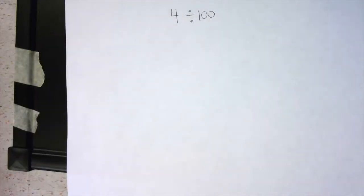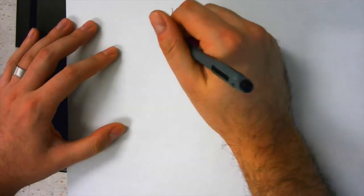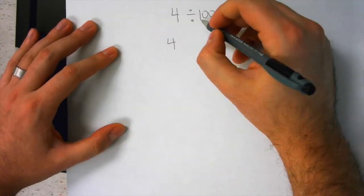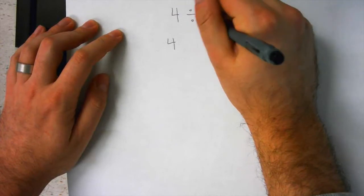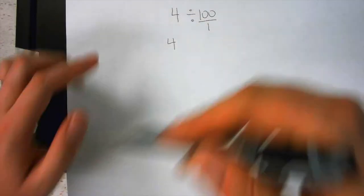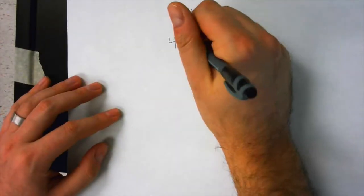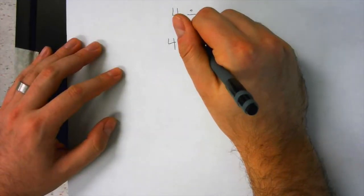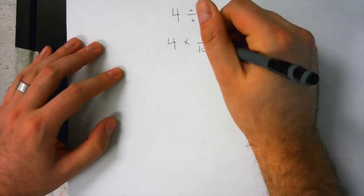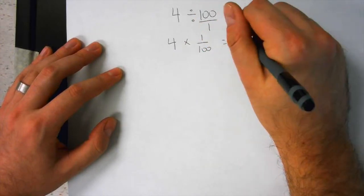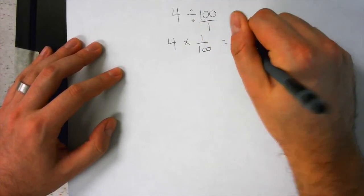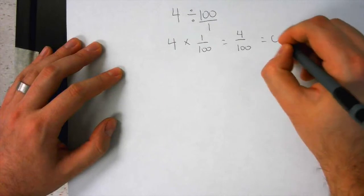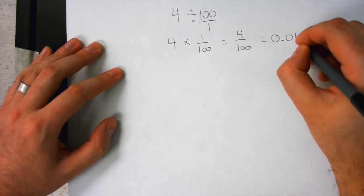So when we have 4 divided by 100, you would take 4, remember 100 is like saying 100 over 1. And if we're taught to multiply and flip, this becomes 4 times 1 over 100, which equals 4 over 100, which equals 0.04.